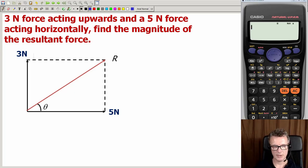Ok, let's have a look at this problem. So we've got 3 newtons acting upwards, 5 newtons acting horizontally. Find the magnitude of the resultant force.